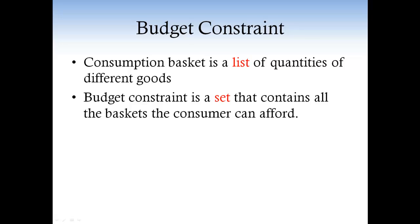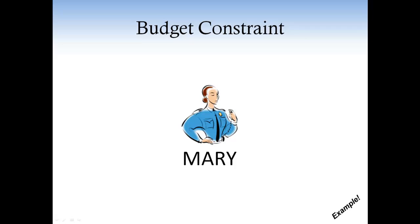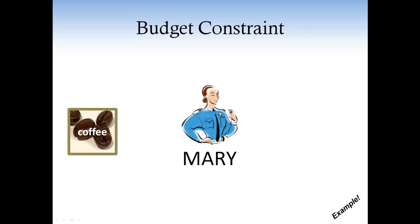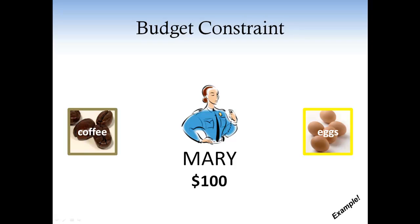Let's look at an example. Say you have a consumer, let's call her Mary, who must decide on how much coffee and how many eggs to consume. Assume that Mary has $100 to spend on those goods, and that the price of coffee is $10 per pound, and the price of eggs is $5 per dozen.